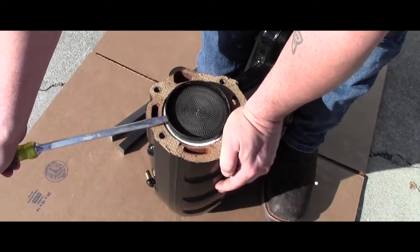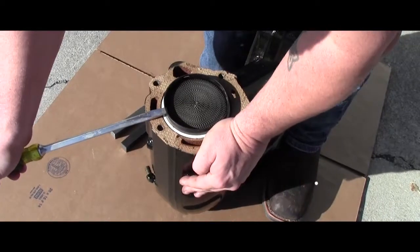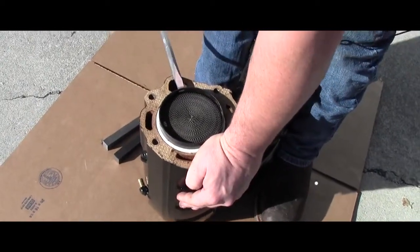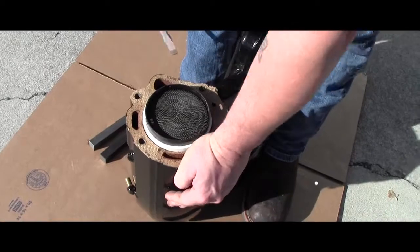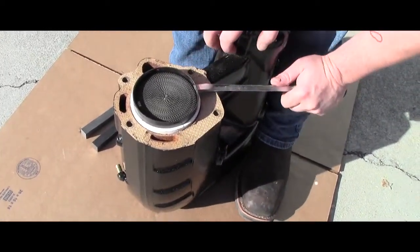To start, go ahead and take your flathead, get it into the slot, and very easily start prying. Pry from different locations so as to not put pressure on just one portion of the canister.